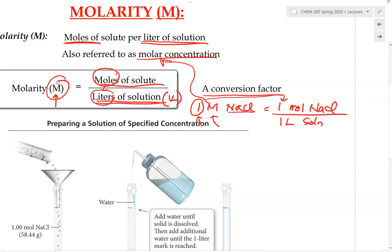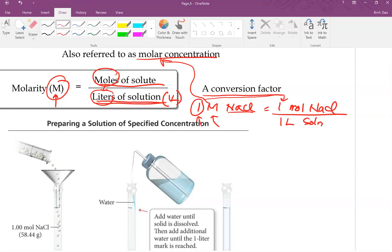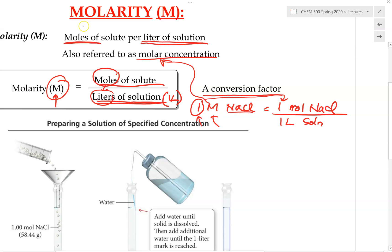So again, molarity M equals moles of solute over liters of solution. For our 1 molar NaCl example, this means 1 mol of NaCl per 1 liter of solution — which we write as 1 M NaCl.